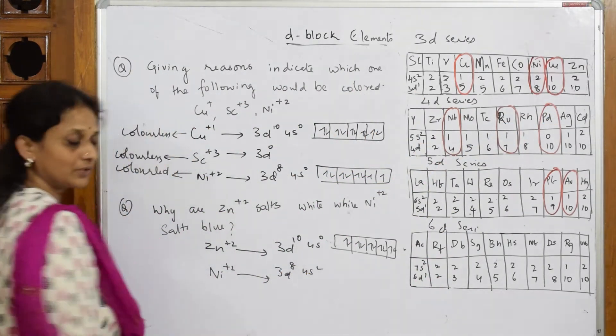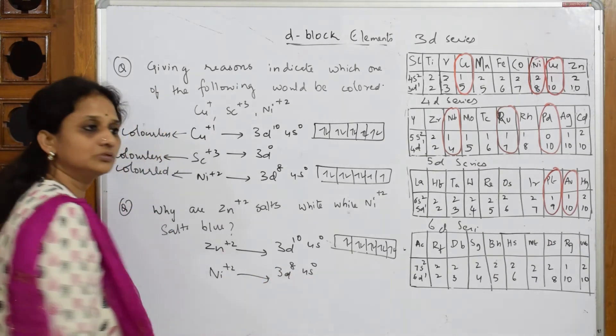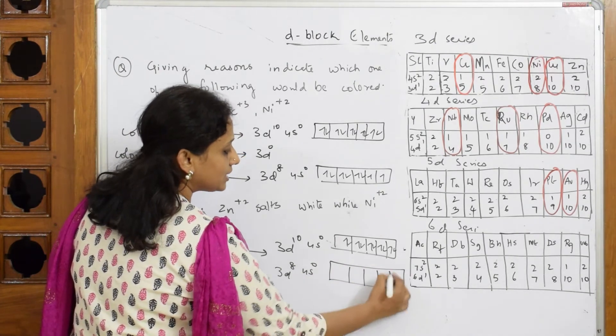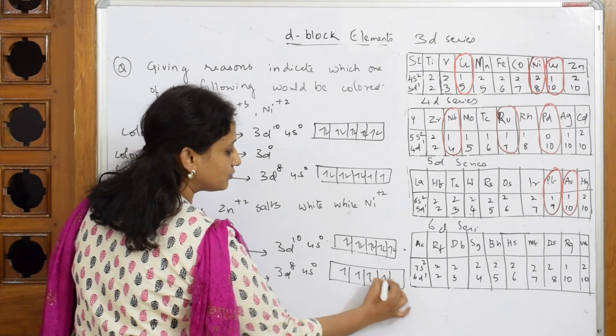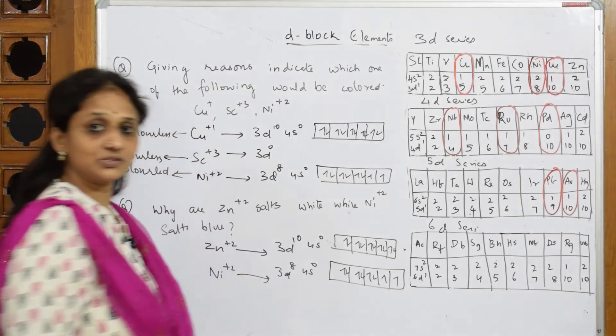Now take out two electrons from this, this becomes zero. So now do we have unpaired electrons? Yes, we have unpaired electrons: 1, 2, 3, 4, 5, 6, 7, 8 - we have two unpaired electrons.